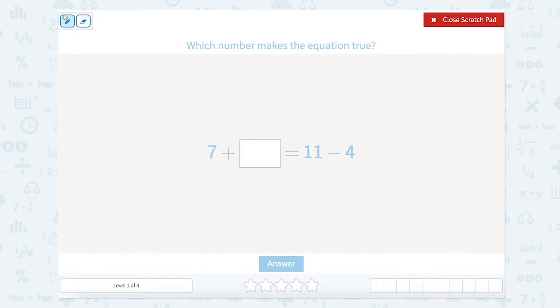So to solve this problem we need to make sure that this side will equal this side. Since we have a missing number here, let's solve this side of the equation first. What is 11 minus 4? Well, 11 minus 4 is 7.